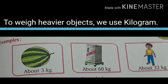To weigh heavier objects, we use the unit kilogram. See the examples. The weight of the watermelon is about 3 kg. The weight of the refrigerator is about 60 kg. And the weight of the boy is about 30 kg. To weigh heavier objects, we use the unit kilogram.